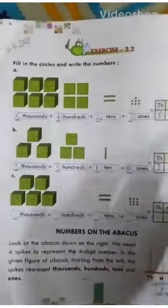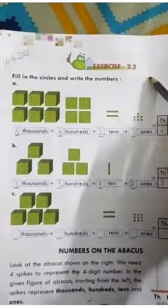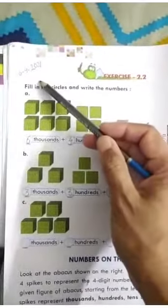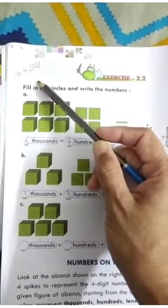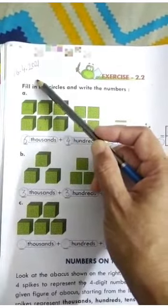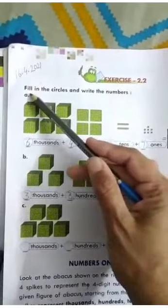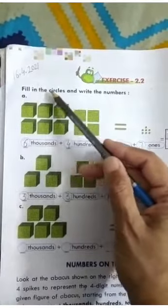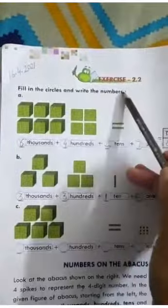Good morning students. Now we will do exercise 2.2. First of all, you will write the date on top of it. Today is 16th April. Read the question: fill in the circles and write the numbers.